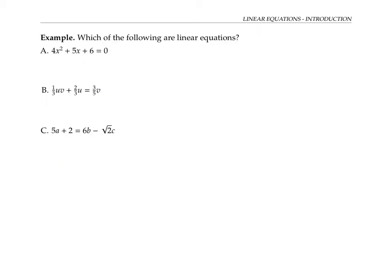So which of these three examples qualify as linear equations? The first one does not because 4 is multiplied by x squared, the square of a variable, not just a single variable.